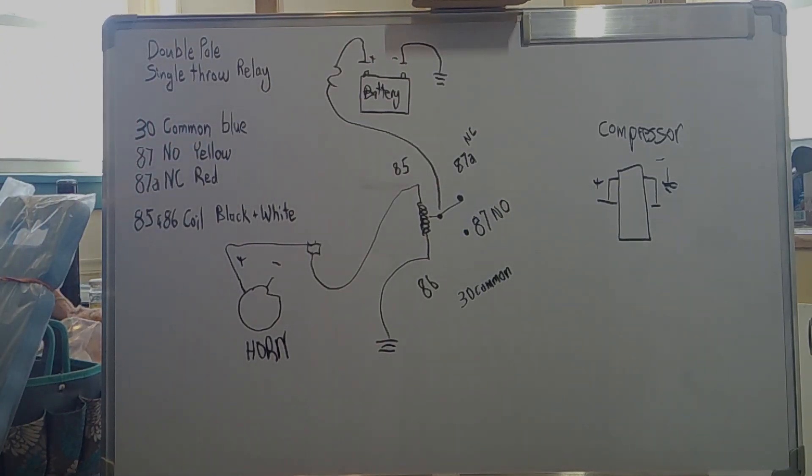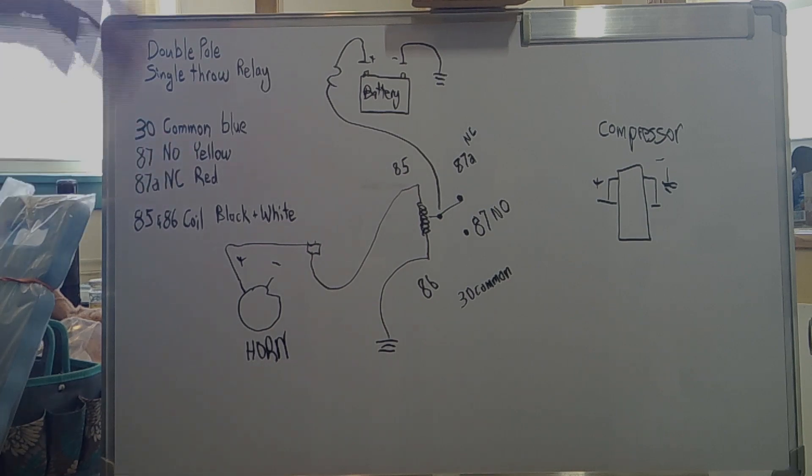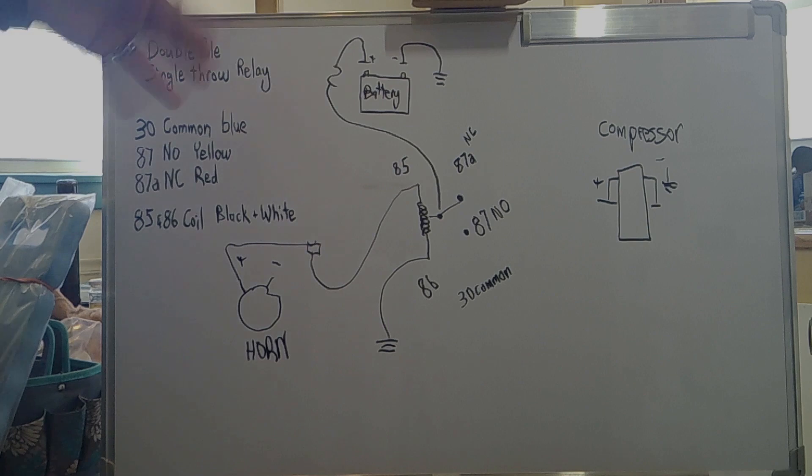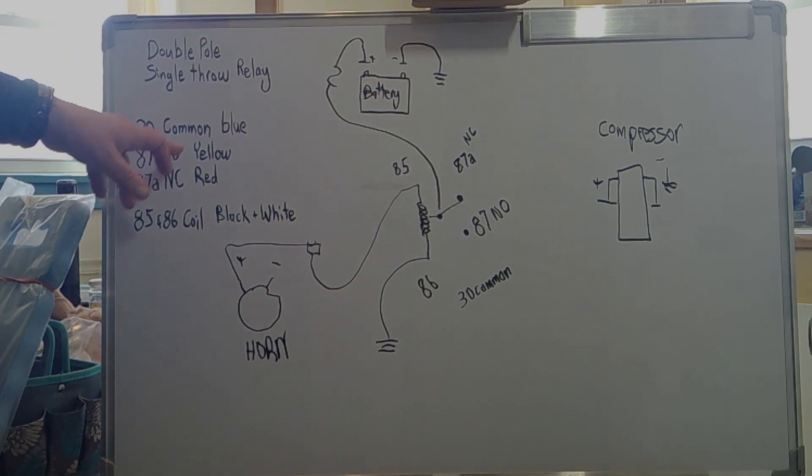Now, on a relay, you have these pins. Pin 30, which is your common pin, that's where your power feed will go into. Pin 87 is your normally open circuit. That's if something you want to turn off when you activate the coil. Pin 87 is normally open. That's the one you want to use when you turn on the circuit to activate it.